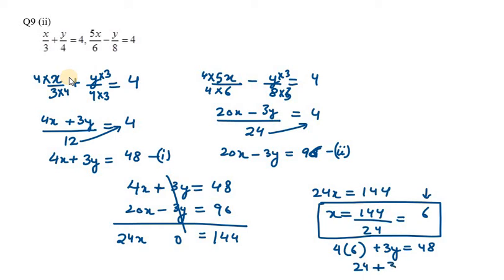Taking 24 to the right-hand side: 3y = 48 - 24 = 24. Therefore, y = 24/3 = 8.